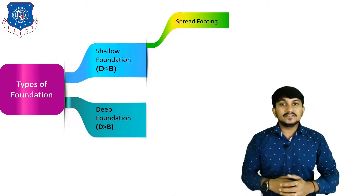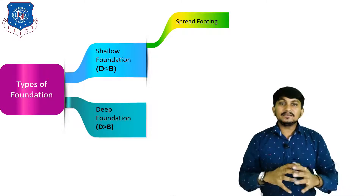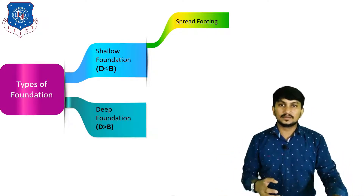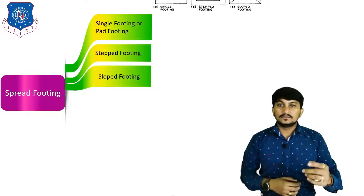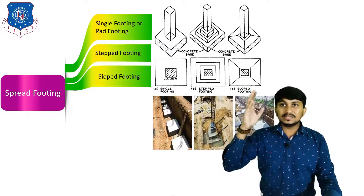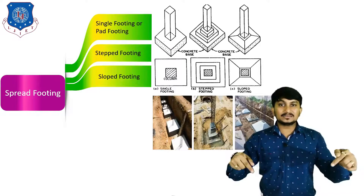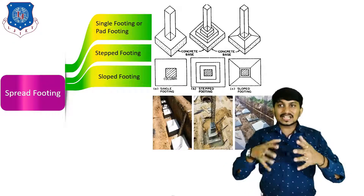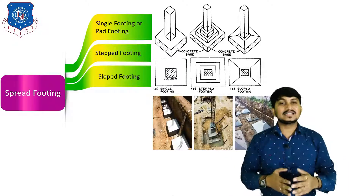Shallow foundation is divided into a number of types of footing. The first is spread footing, where the load is spread into the soil by the geometry of the footing. Spread footing is divided into types: single footing, step footing, and slope footing. In single footing, one pad is provided to transfer the load of the column into the soil. In step type footing, load is transmitted by a number of steps. In slope footing, load is transmitted by a slope.